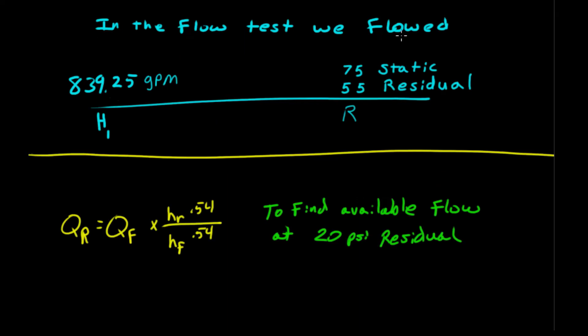In the flow test, the first one we did, we flowed 839 gallons a minute with a static of 75 or a residual of 55. We calculated that out already. As I said earlier, the problem in NFPA 291 is this one here. So that's to find our available flow at 20 PSI residual pressure.